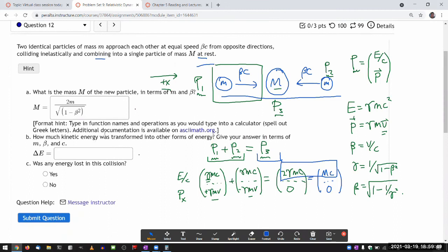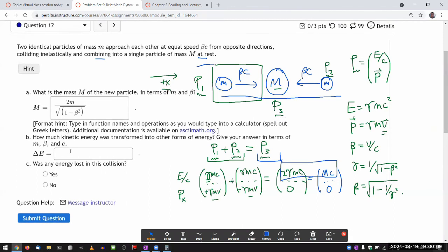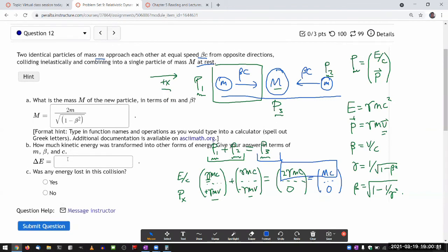And it asks how much kinetic energy was transformed into other forms of energy—other mainly meaning the rest energy. Give your answer in terms of m, beta, and c.